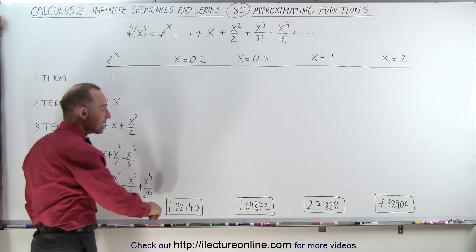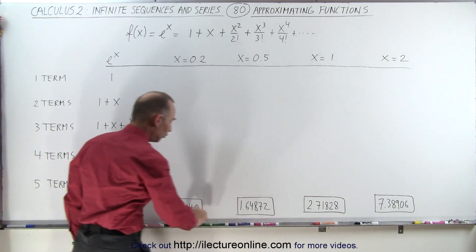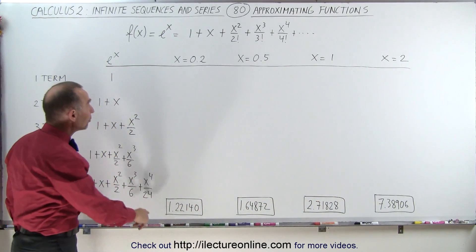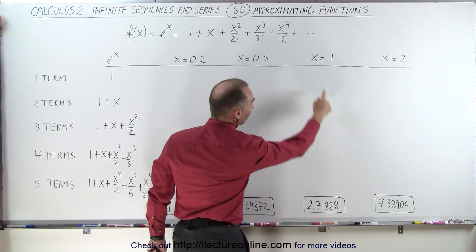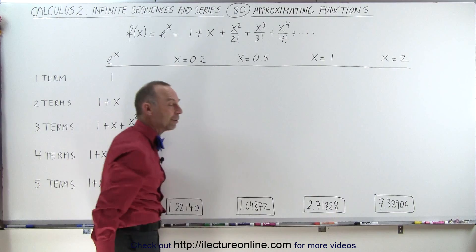Here are the accurate calculated values to five decimal places for e to the 0.2 power, e to the 0.5 power, e to the first power, and e to the second power.